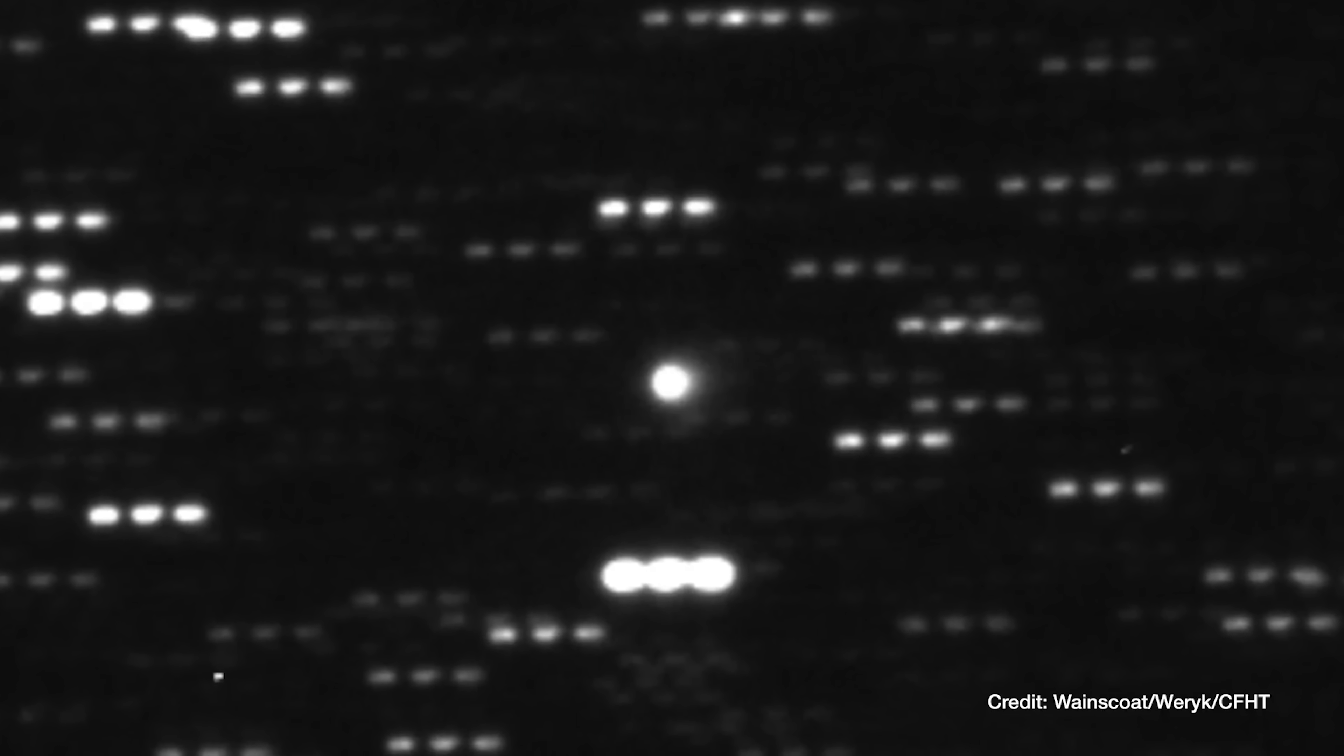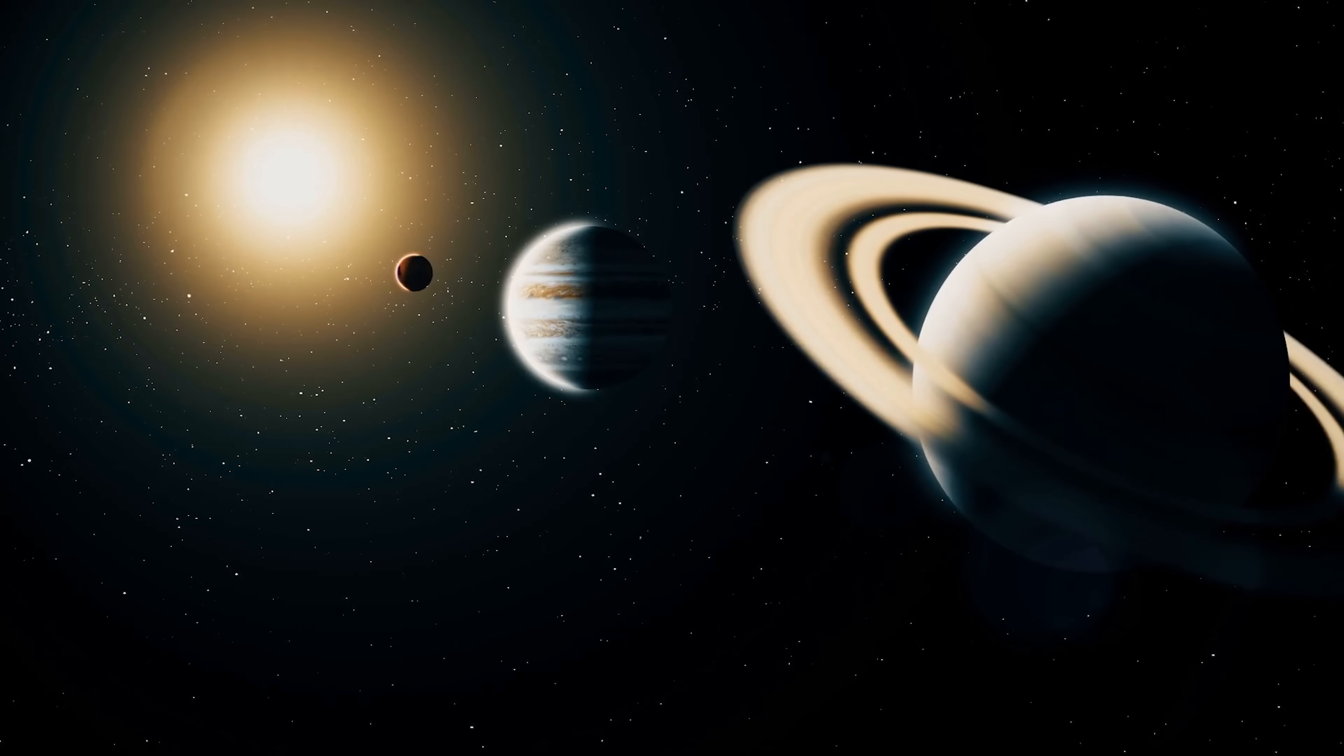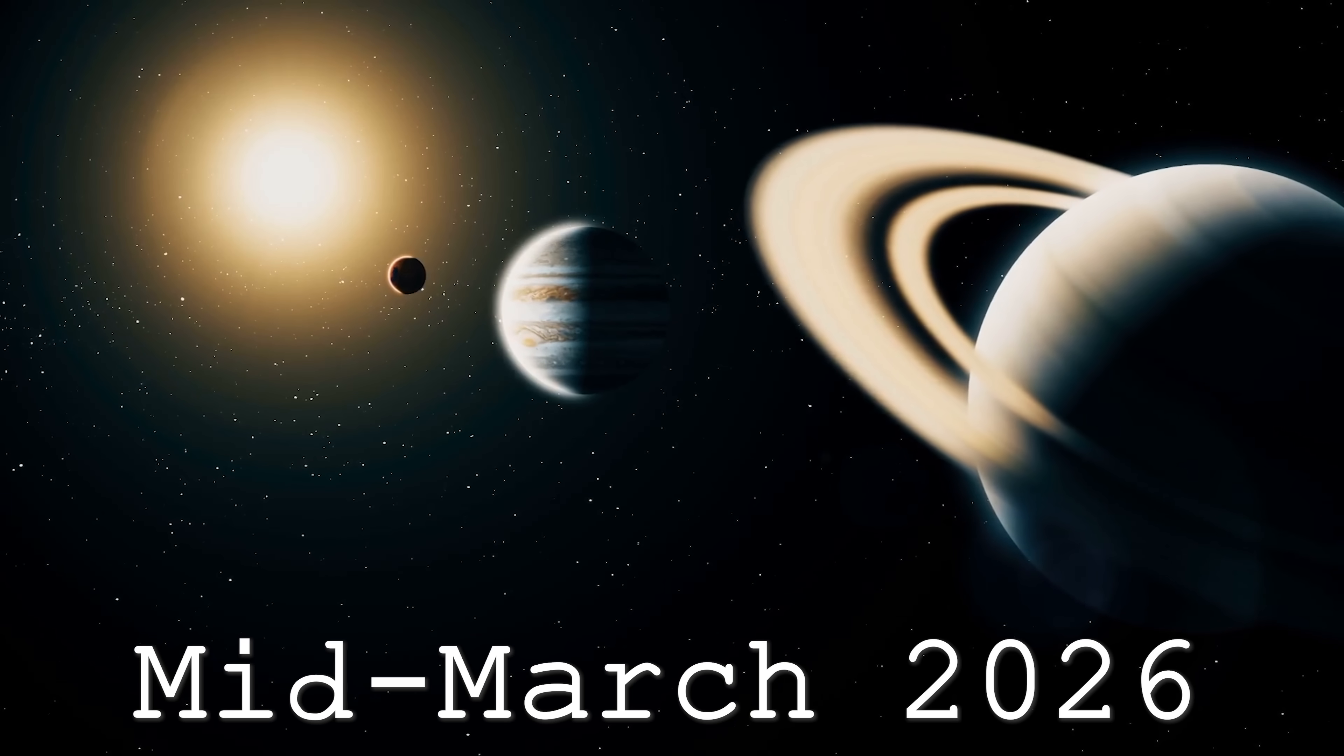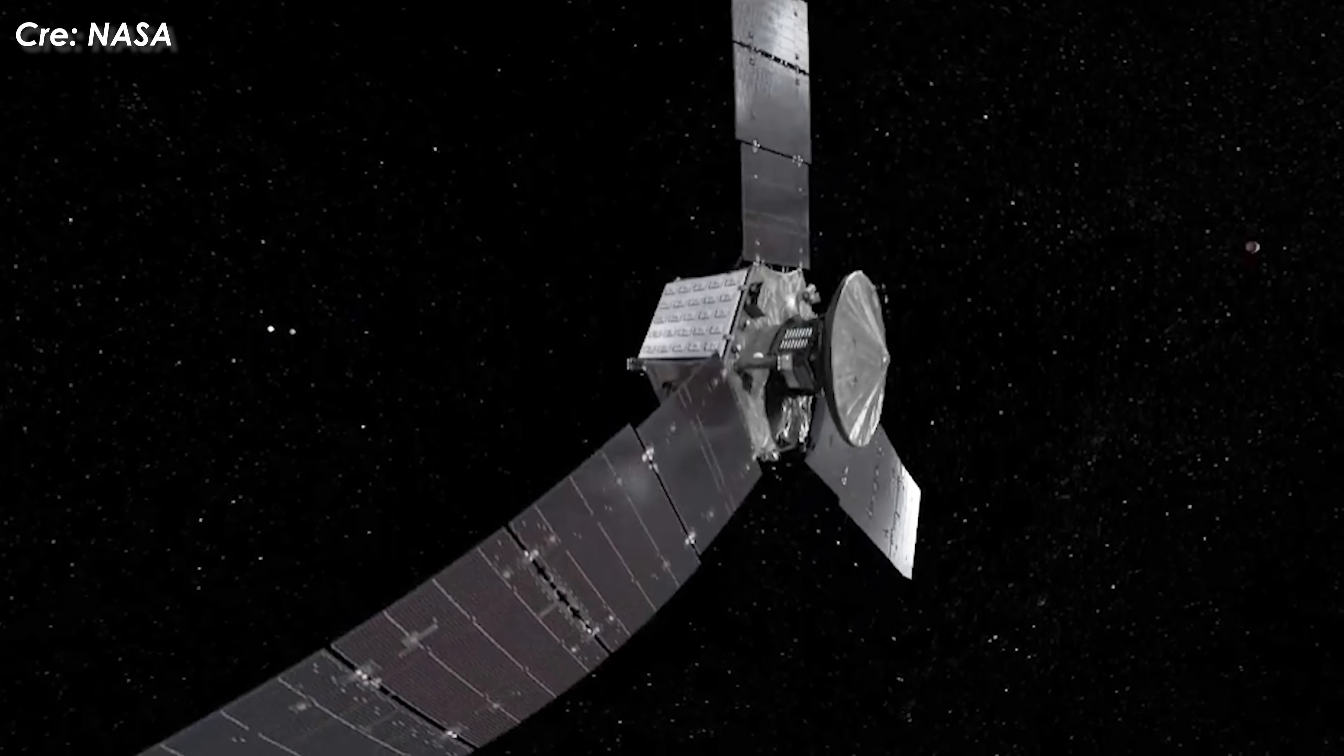Of course, 3I Atlas will not stop there. According to scientists' calculations, after passing the Sun, 3I Atlas will approach Jupiter in mid-March 2026. With this timeline in mind, Avi Loeb reaffirmed his views during an interview with Fox 10 Talks, surprising us with a rather intriguing suggestion: using the Juno spacecraft to intercept 3I Atlas.